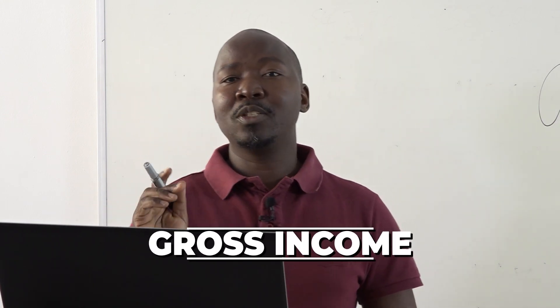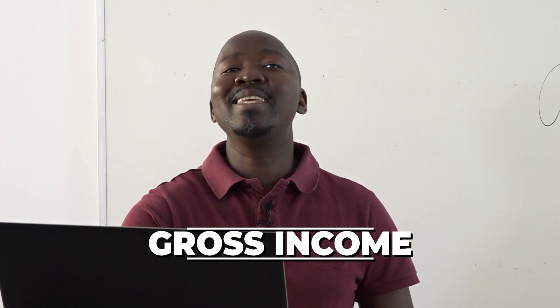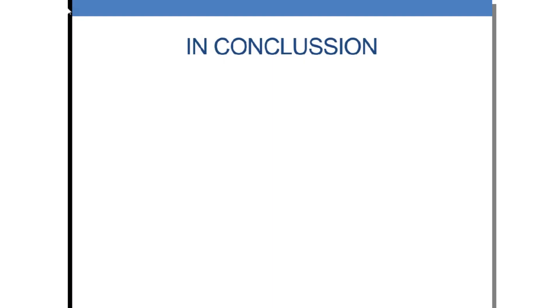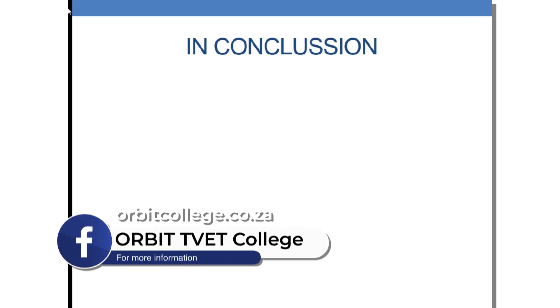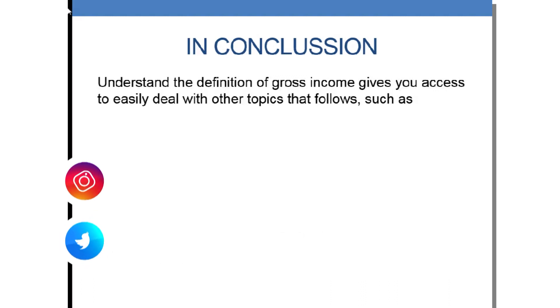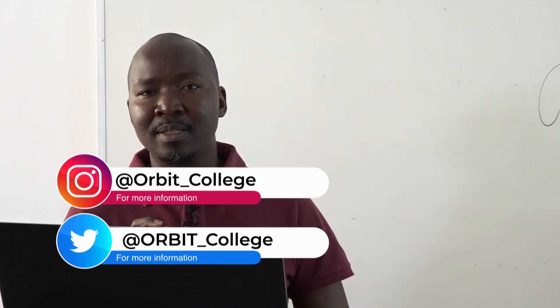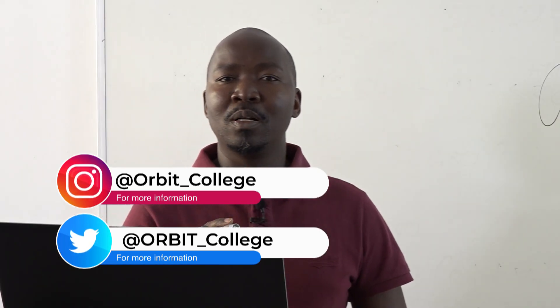It is very important to remember the reasons, because a transaction can come in any form and you must be able to interpret it. I think we covered all the components of the definition of gross income. In conclusion, understand the definition of gross income because it gives you access to deal with all the other topics in all the modules in your textbook. Thank you.